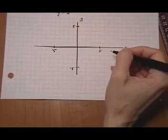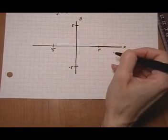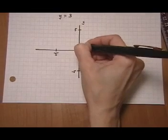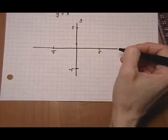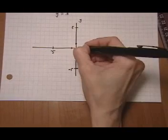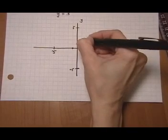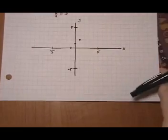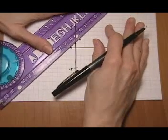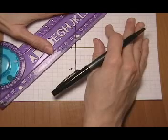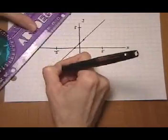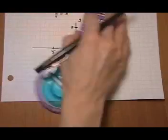And now we can graph our points. So for the first equation, our first point was zero, one. Next point was minus one, zero. And then one, two. And there's our first line. So go through the center of all three points. Extend your line so there's plenty room for the intersection to happen.